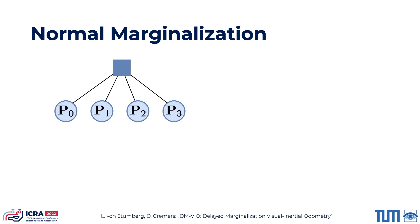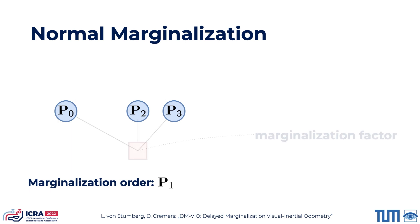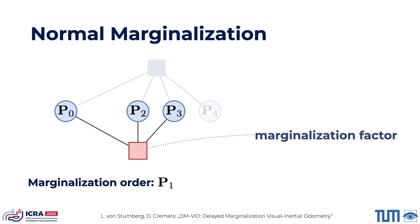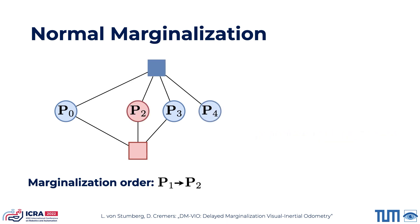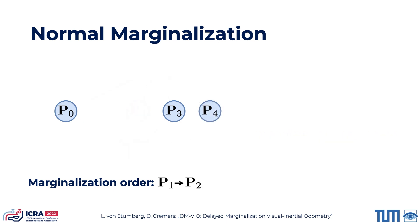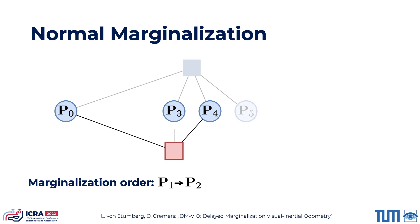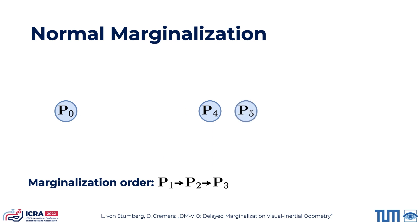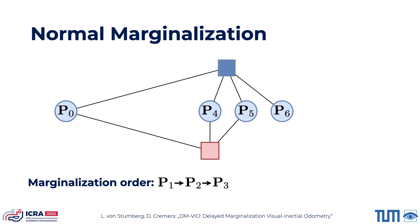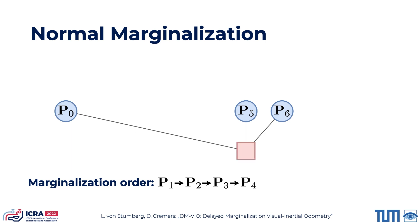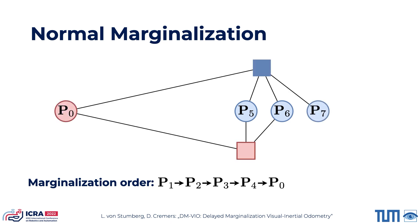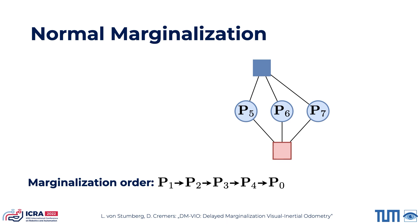In the visual system, keyframes are being marginalized regularly, which you can see here, where p1 is marginalized first, resulting in a marginalization factor. Over time, marginalization continues. Marginalization has a lot of advantages and keeps the runtime constrained. However, the disadvantage is that it cannot be reverted and linearization points of connected variables have to be fixed.